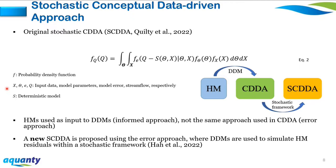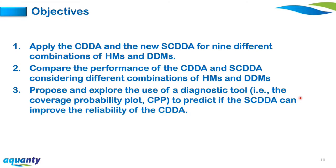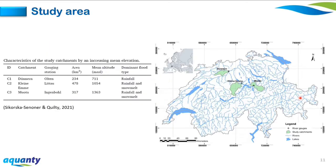I propose a new SCDDA that takes advantage of the multiple parameter sets generated by the CDDA and similarly accounts for various uncertainty sources by assimilating hydrological model residuals within a stochastic framework. The new SCDDA serves as a second stage of post-processing: the data-driven model first corrects residuals of the hydrological model (CDDA), then the stochastic framework converts the CDDA into the stochastic CDDA. This research has recently been published in Environmental Modelling and Software as open access. The objectives are to apply and compare the CDDA and new SCDDA for different HM–DDM combinations, and to propose a diagnostic tool to predict whether the SCDDA can improve upon CDDA reliability.